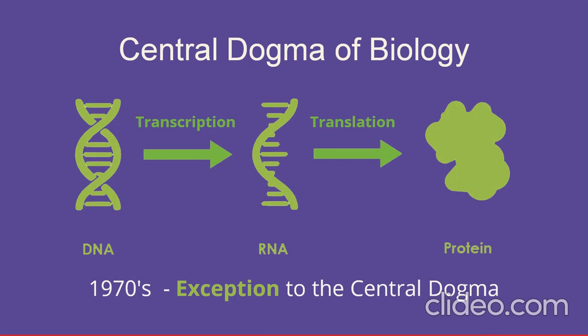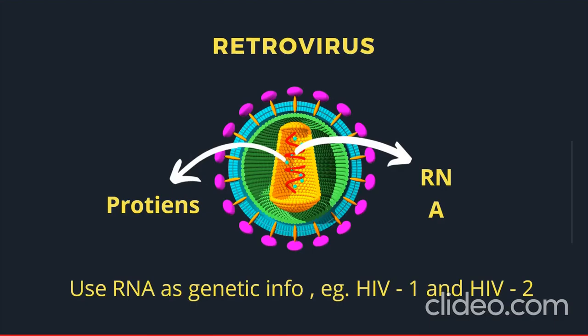But in 1970, some scientists found an exception to the central dogma. These scientists were studying viruses and found some viruses that were using RNA as their genetic material. These viruses are called retroviruses. They have RNA as their genetic material, and when they go inside a host cell, they use the reverse transcription process to create DNA from it.